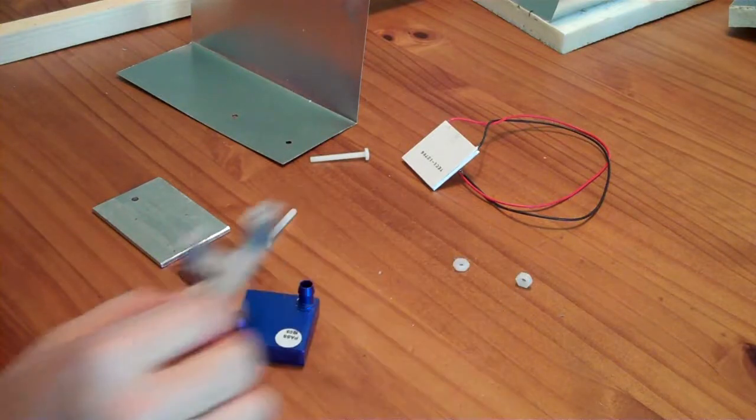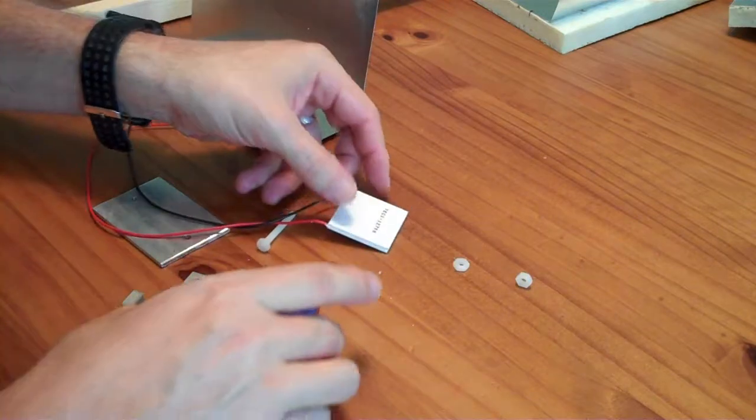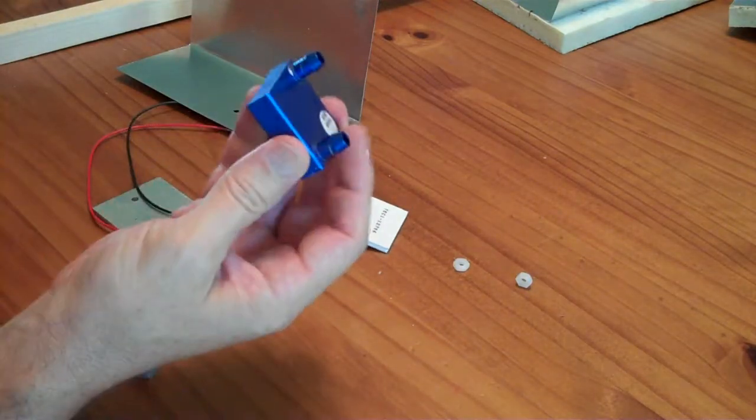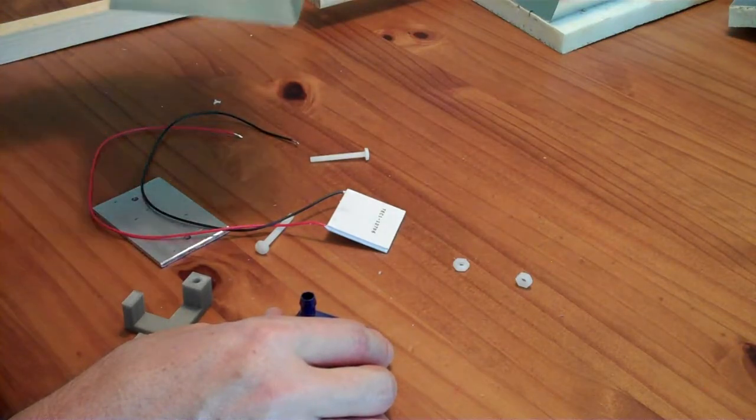Alright, let me demonstrate how I am mounting my thermal electric cooler with a 40 millimeter water block on one side and this aluminum flashing on the other side.